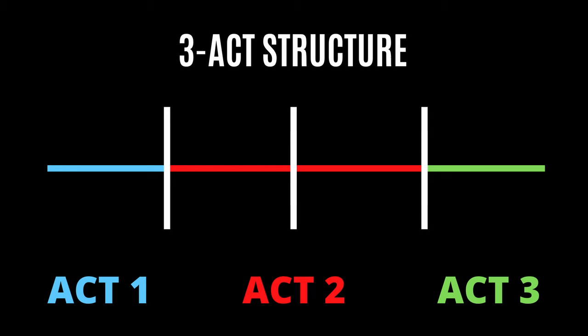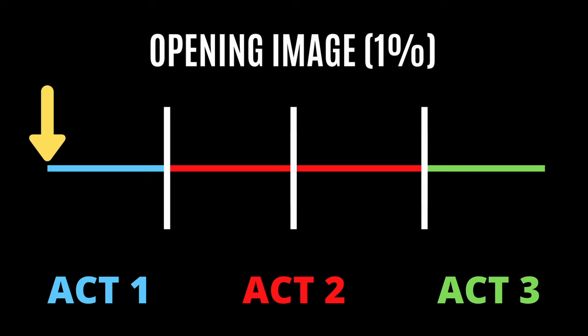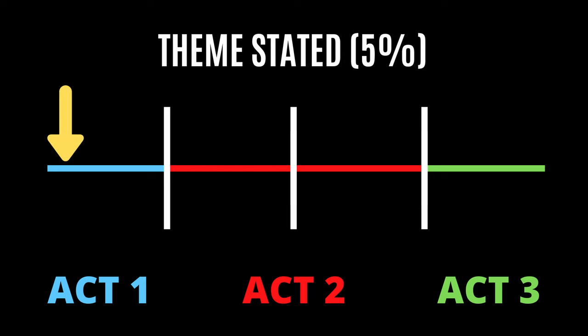Step one is the opening image — an opening snapshot that may introduce the character, setting, or situation, helping the reader get their foot in the door by signaling what the story is going to be about. Step two is theme stated, where we are introduced to the central theme of your story. This is often conveyed through a line of dialogue, like a character saying, 'If you keep living your life this way, you're never going to be happy.'